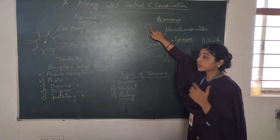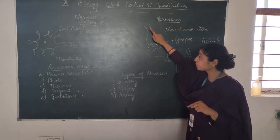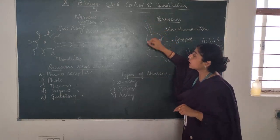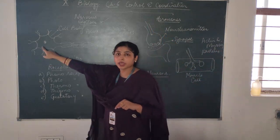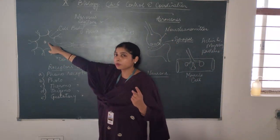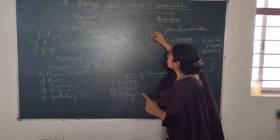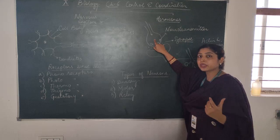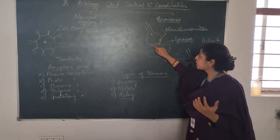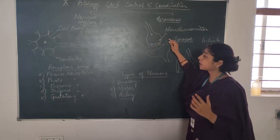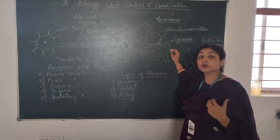So how does it transmit from one neuron to another neuron? When the signal comes from dendrite, cell body or soma, and axon in the same way, here to the nerve ending. When the nerve ending receives this signal, there are a few vesicles containing certain chemicals called neurotransmitters.